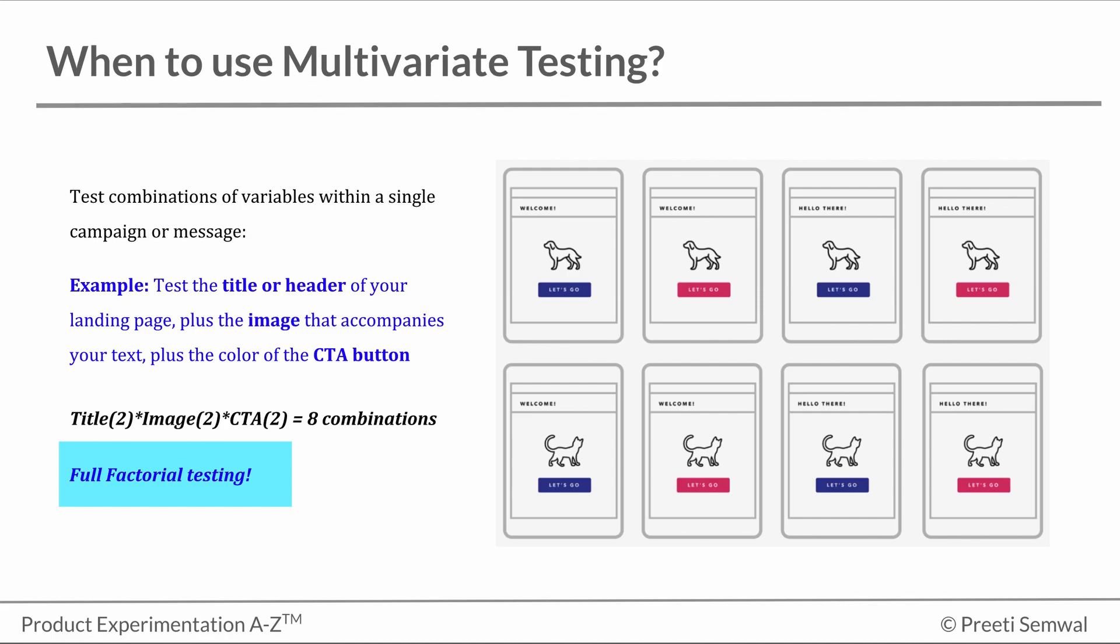In our example here, say changing the image may have very little effect on the performance of the page while varying the CTA box color and the title have huge impact. In that case, we would end up with this variation as the best performance.